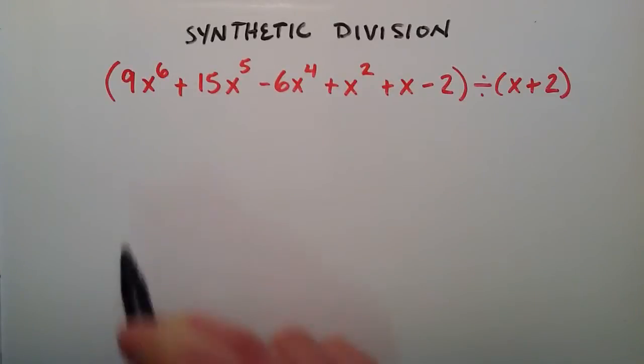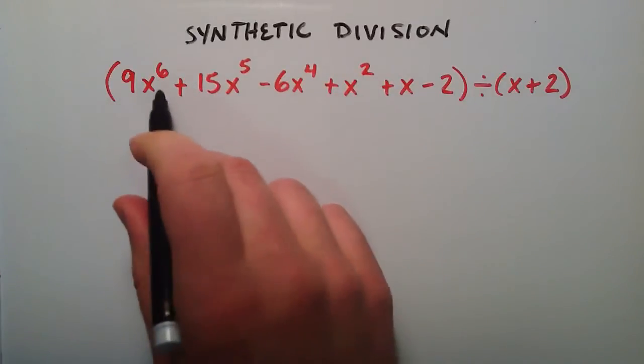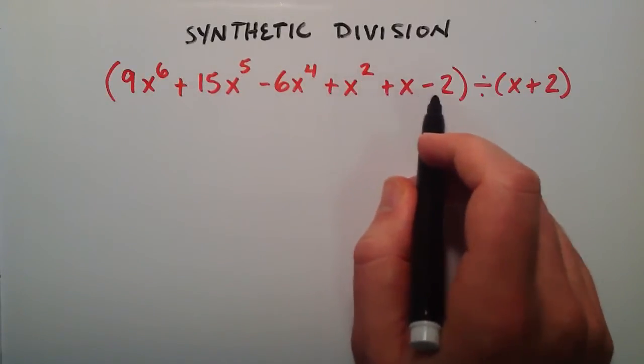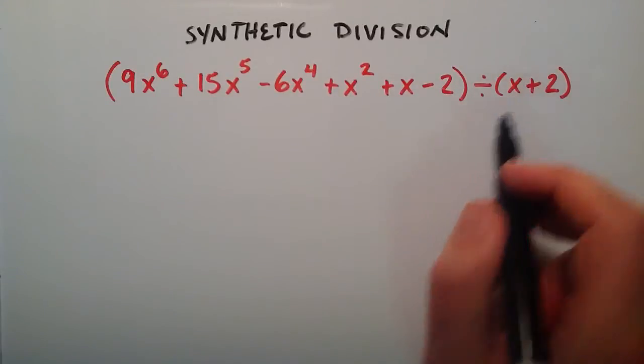So we've got a big polynomial here, 9x to the 6th power plus 15x to the 5th minus 6x to the 4th plus x squared plus x minus 2 divided by x plus 2.